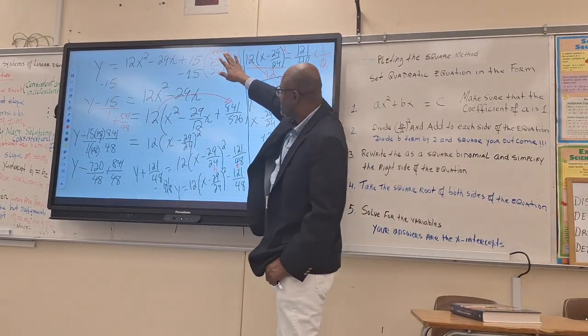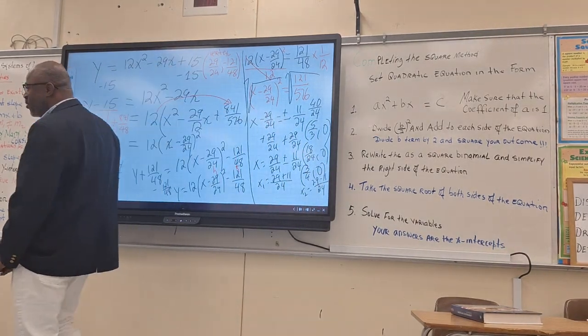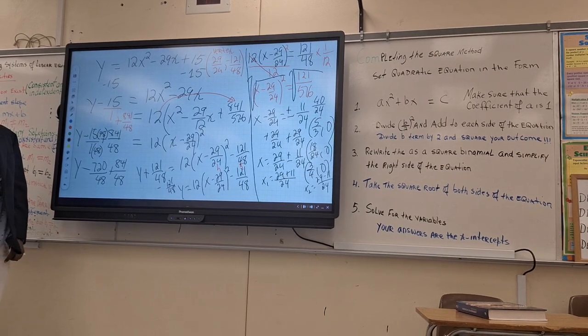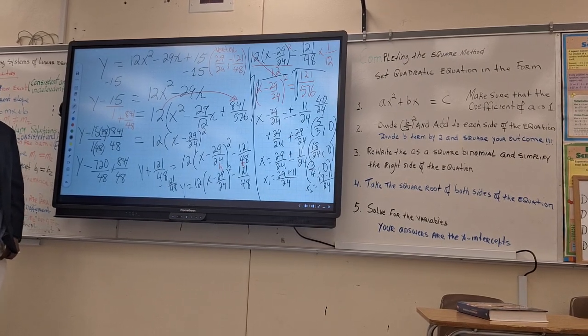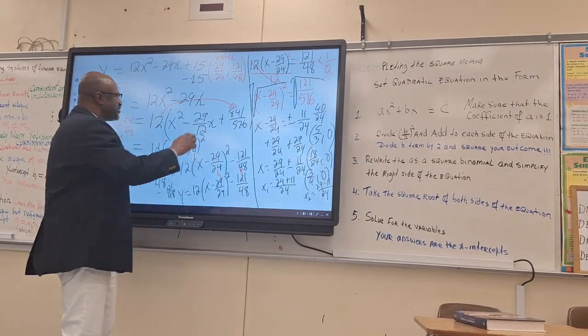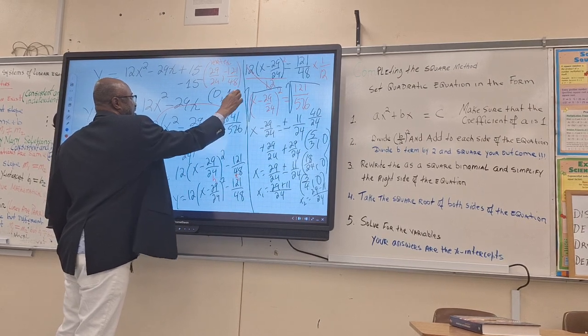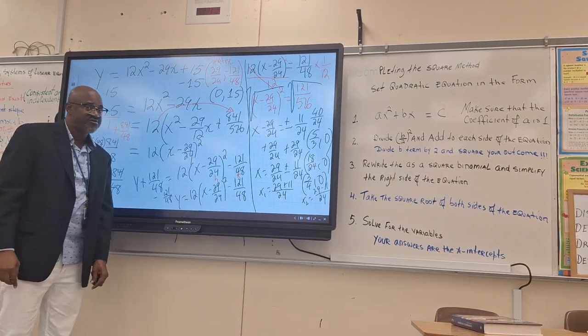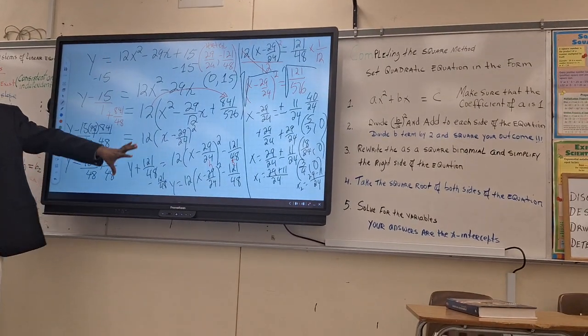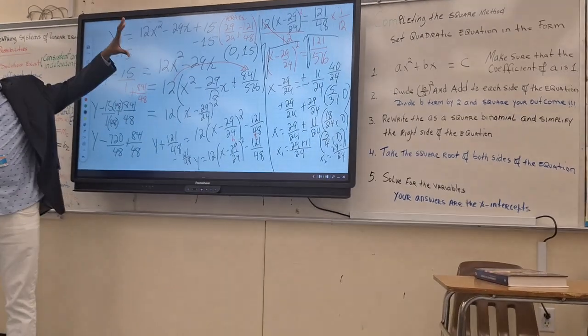So we find the vertex. Those are the two x intercepts. If you go back to the original equation, what would have been your y intercept? 0 comma c, so it's 0 comma 15. Then you're ready to graph that baby. And I'm telling you, it's not easy. Especially those of you who have issues with fractions. So that's what you should do.